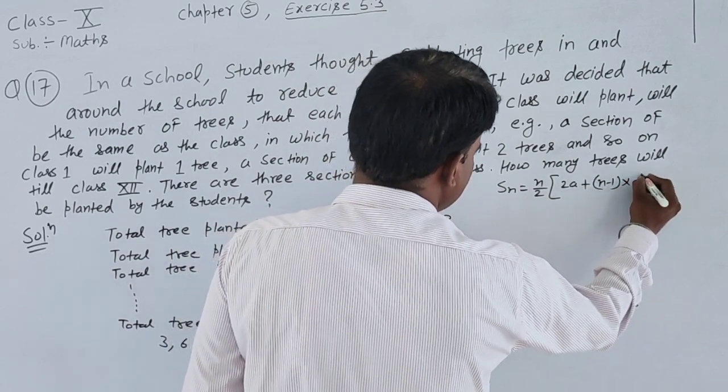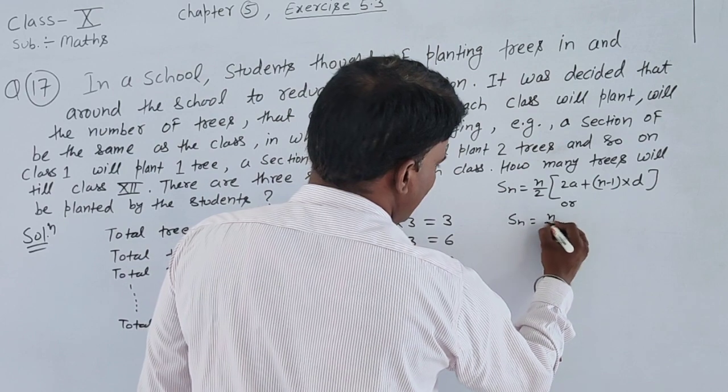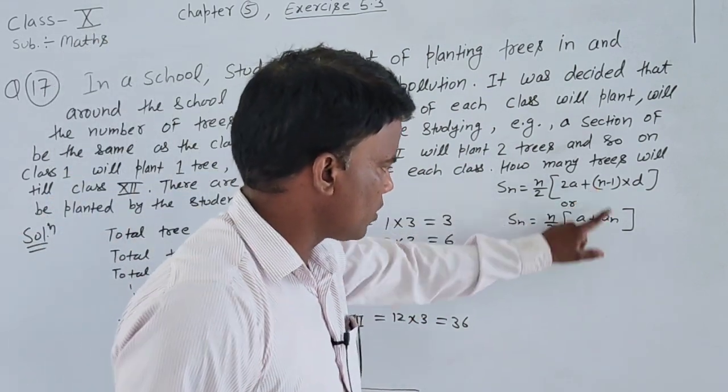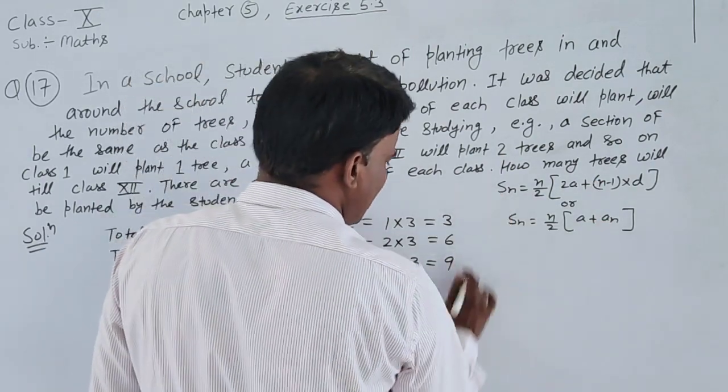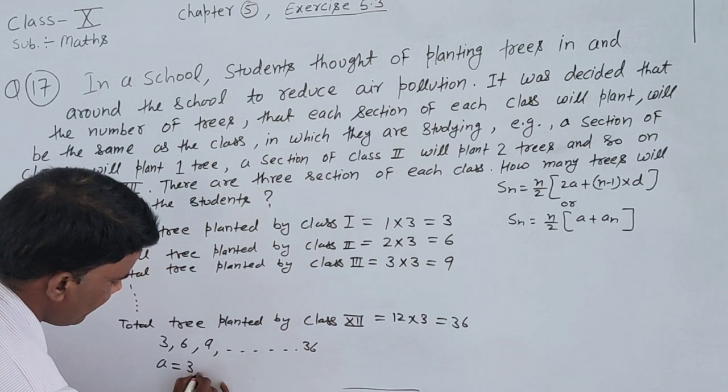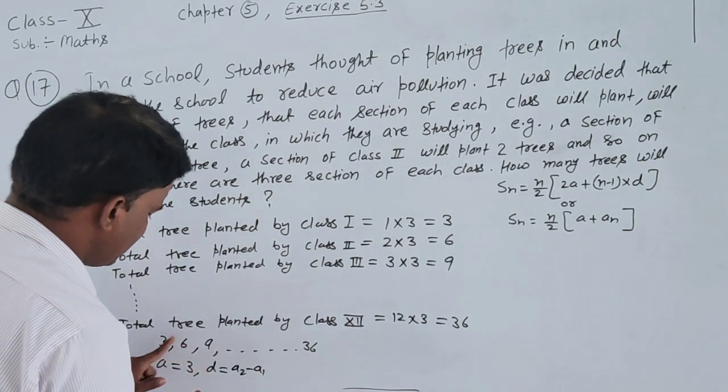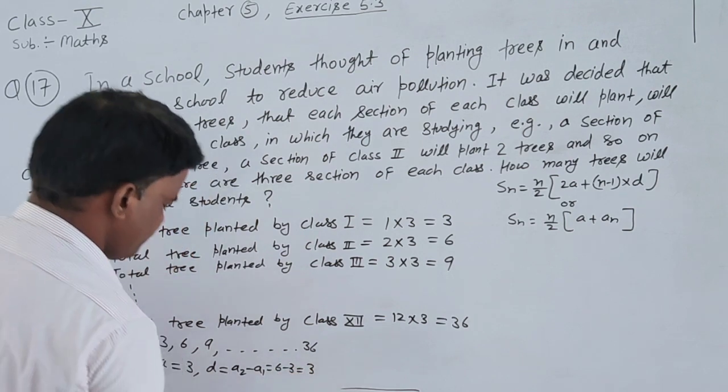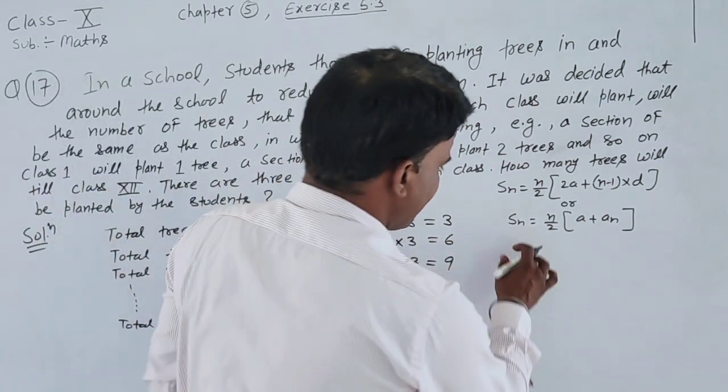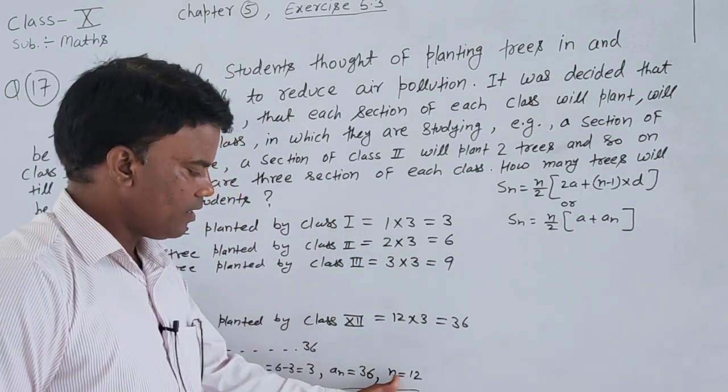The formula is S_n equals n upon 2 times 2a plus n minus 1 times d. I will use the formula S_n equals n upon 2 times a plus l, where l is the last term. The first term is given, so I will use this formula.